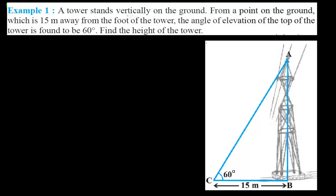The question says a tower stands vertically on the ground, so this AB is the tower. From point C on the ground, which is 15 meters away from the tower, we are watching upward. The angle of elevation of the top of the tower is 60 degrees.